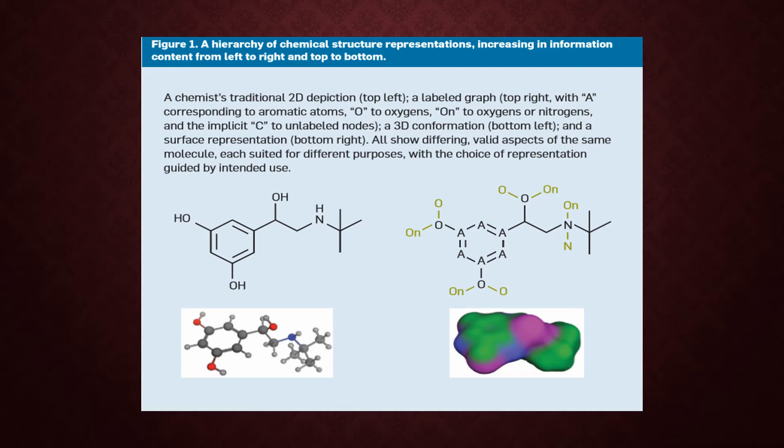Figure 1 shows that there are many different ways to represent the structure of a molecule. For example, on the top left it is a 2D structure that is not fully labeled, and on the top right it is fully labeled and is also a 2D structure. On the bottom left it is a 3D conformation, and on the bottom right it is a surface representation. So there are four ways to represent a molecule, and each of those gives different information, but all four are accurate and valid.